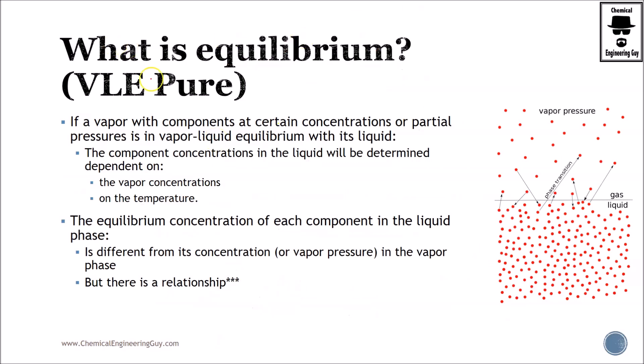If a vapor with components at certain concentrations or partial pressures is in vapor-liquid equilibrium, then by definition the component concentrations can be determined. This is nothing more than if you know this is in equilibrium, so if you have vapor-liquid equilibrium, then you can find the vapor concentrations and the temperature given a pressure and the compositions or the quality.